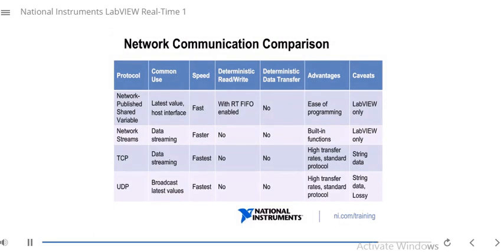For standard protocols: TCP is better suited for data streaming, while UDP is better for broadcasting latest value. Both are very fast, and neither belongs in a deterministic loop since they're non-deterministic. The advantages are that they're standard protocols potentially used by third-party devices, and they have high transfer rates. The caveats: both use string data, so the input and output terminals of TCP and UDP functions are string data types — you'll need to convert your data to string if not already using strings. With UDP, remember it is lossy; there's no connection established so there's no way to guarantee your data is received on the reader side.